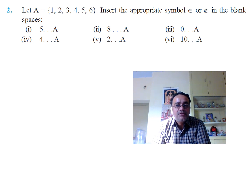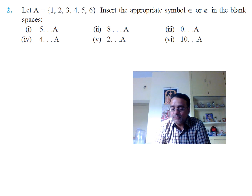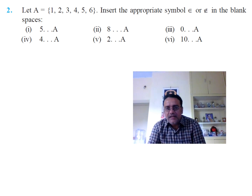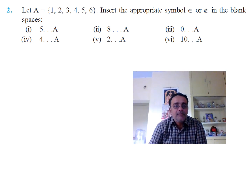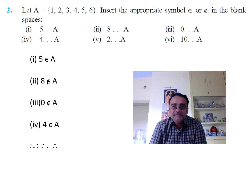Question 2: Set A is {1, 2, 3, 4, 5, 6}. We need to insert the appropriate symbol — belongs to or does not belong to. 5 belongs to A. 8 is not there, so 8 does not belong to A. 0 is also not there, so 0 does not belong to A. 4 is there, so 4 belongs to A. 2 is there, so 2 belongs to A. 10 is not there, so 10 does not belong to A.